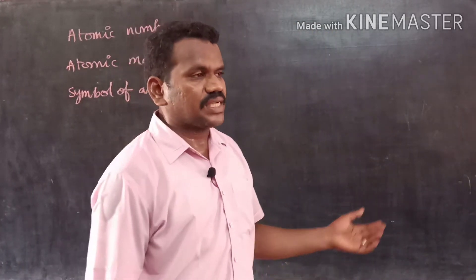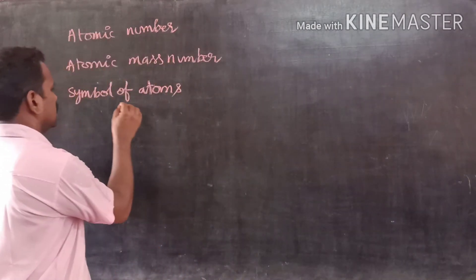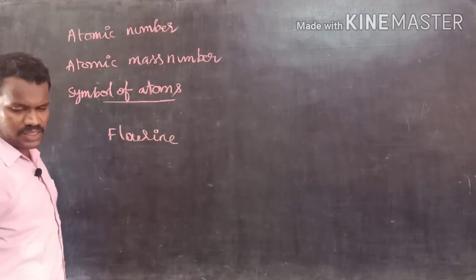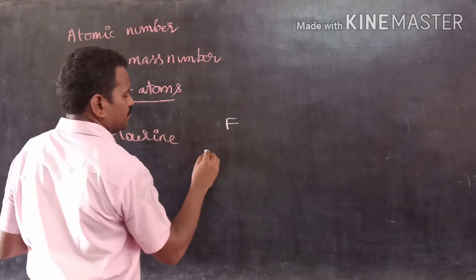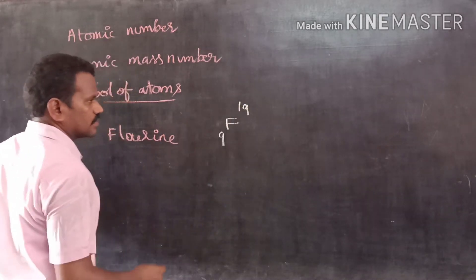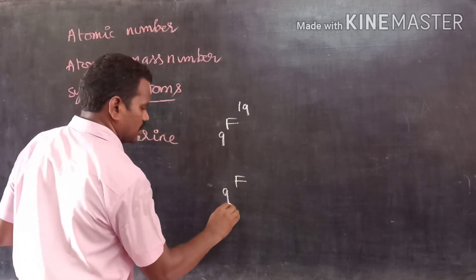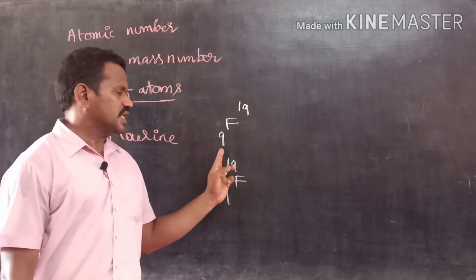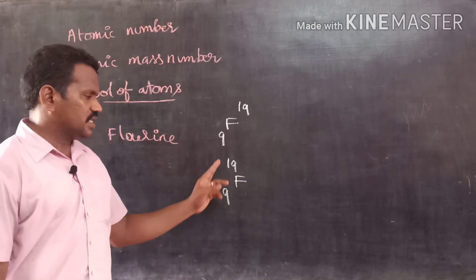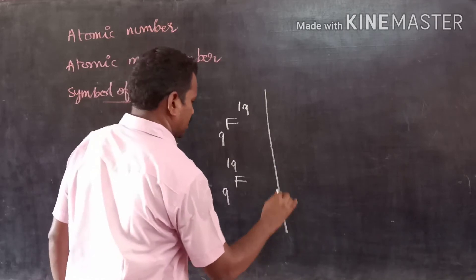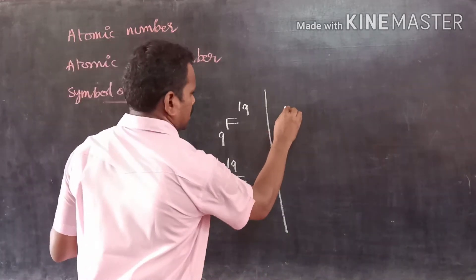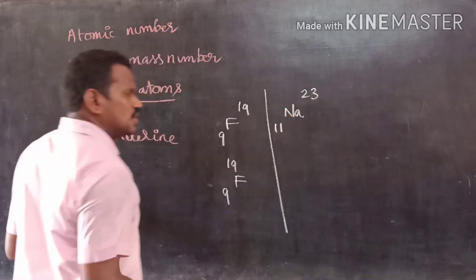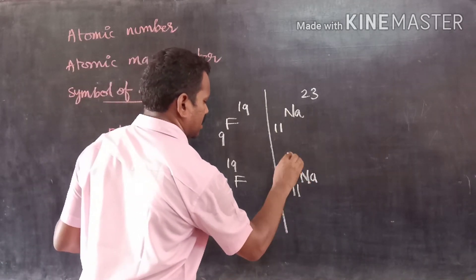For example, if you consider the symbol of elements, taking Fluorine, the general representation is F-9-19. We can also represent it as 9-F-19. Similarly, for sodium the symbol is Na, and we write it as Na-11-23, or 11-Na-23.